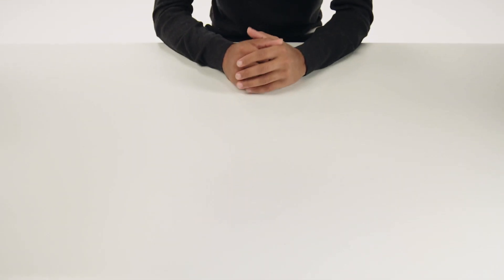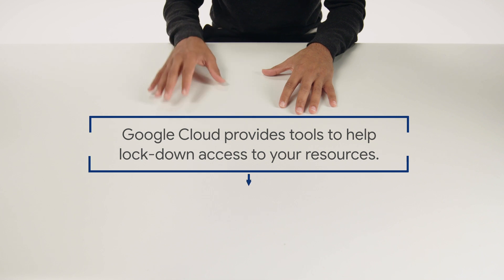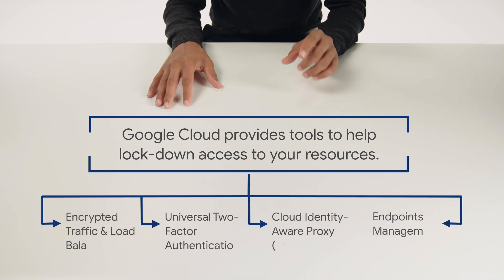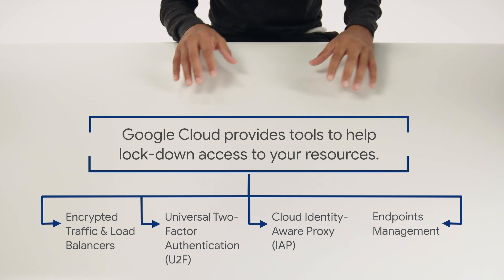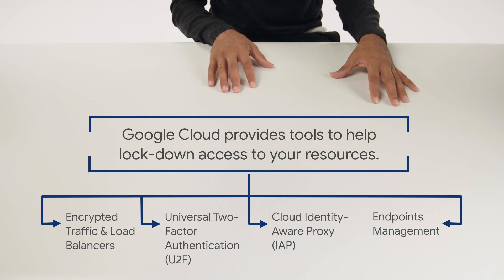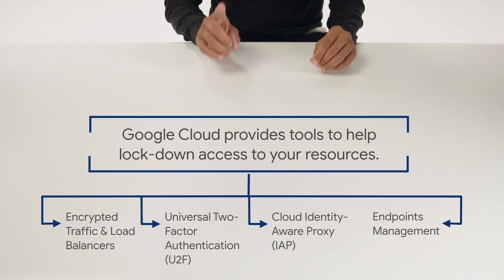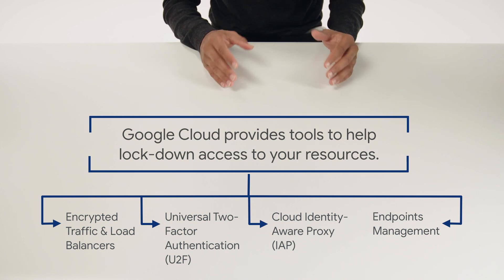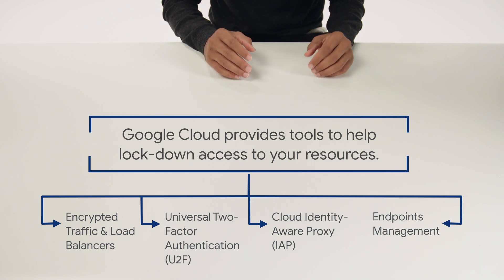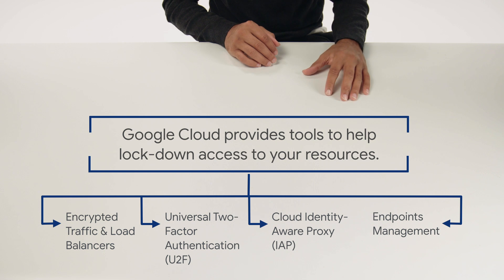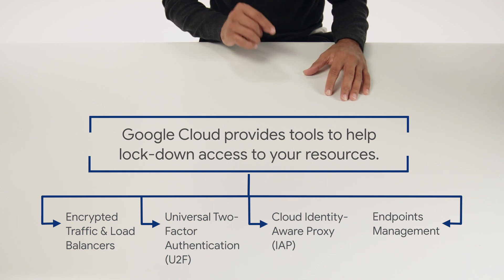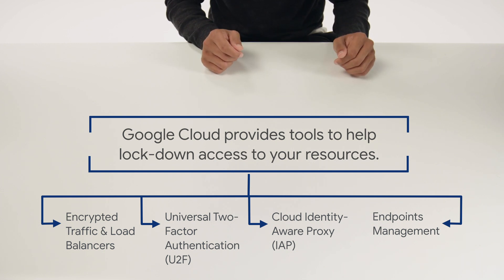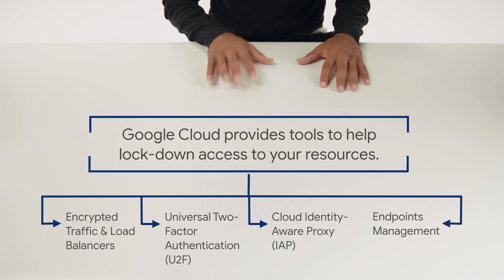Luckily, Google Cloud provides a lot of tools and services to protect its users. Some of those protections include encrypted traffic and load balancers to combat man-in-the-middle and DDoS exploits, universal two-factor authentication to minimize phishing, Cloud Identity-Aware Proxy to make sure that only the right people get access to applications, and endpoint management to make sure that users are using secure devices to access company resources, and more. Let's see how they work.